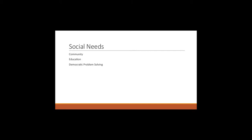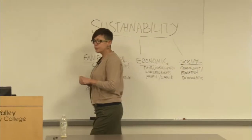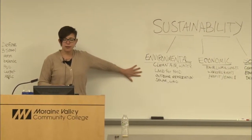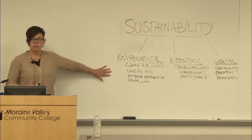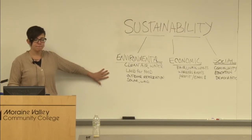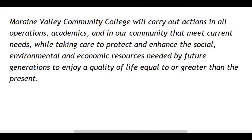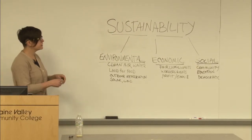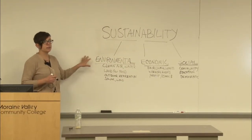Maybe you, during your class time, can talk about what other things might fall within each of these categories. Going back to that really big definition and breaking it down: we want to meet our current social, environmental, and economic needs so that future generations can enjoy a quality of life similar to today or better. When we talk about what Moraine Valley is doing, it carries out actions in college operations and in our community to protect and enhance these three categories. We cannot talk about each of these individually — sustainability is supported by each of them. We call this the three-legged stool.